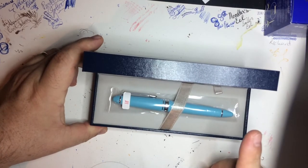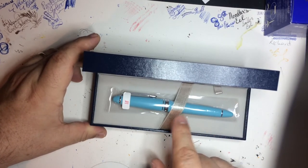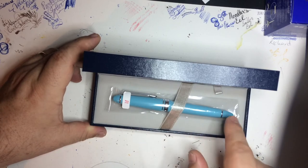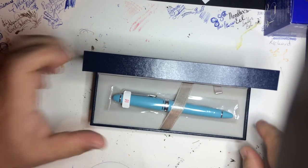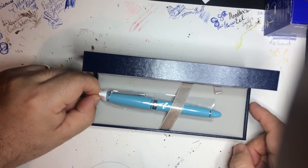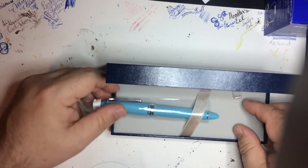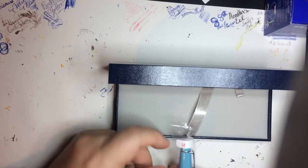It pops open with a nice positive click and here's our first surprise: the pen is in backwards. Normally the nib is at the other end and the foil is also open, or not the foil but the vellum is also open.